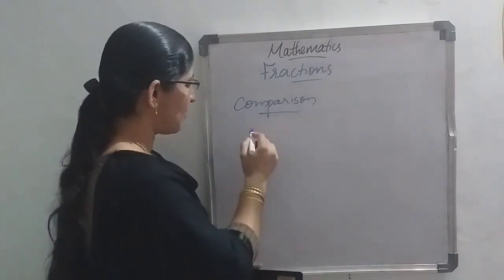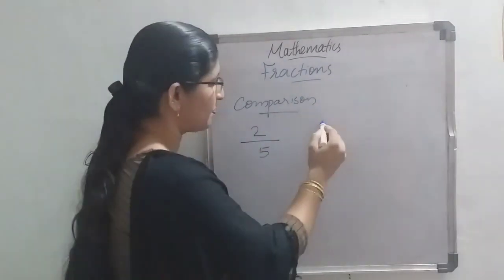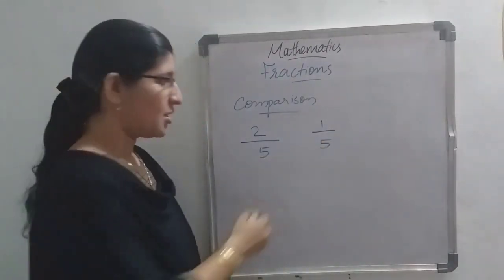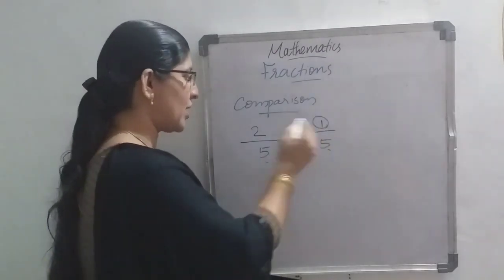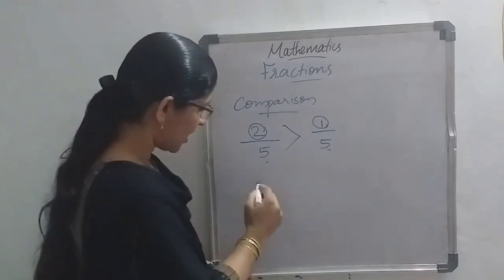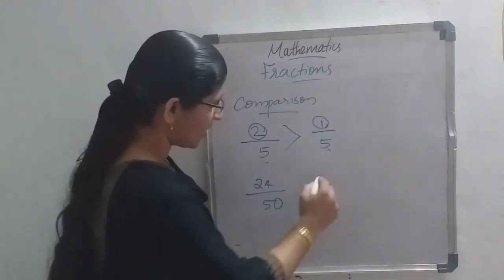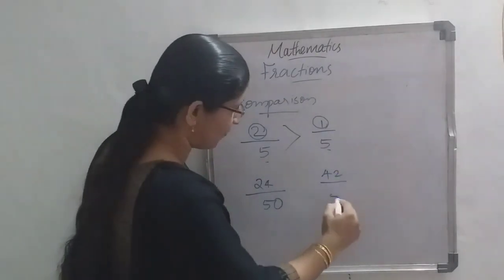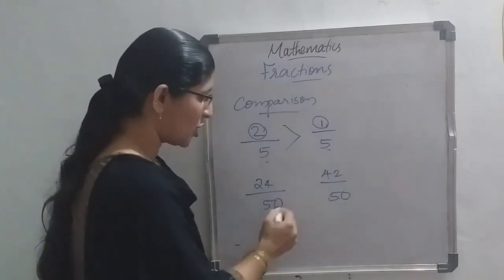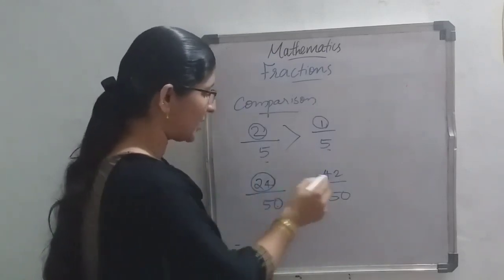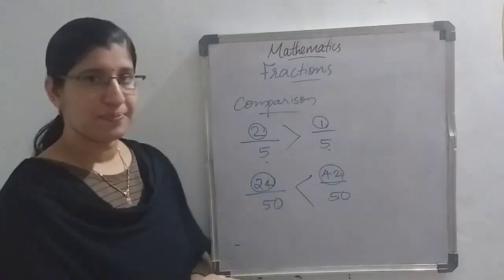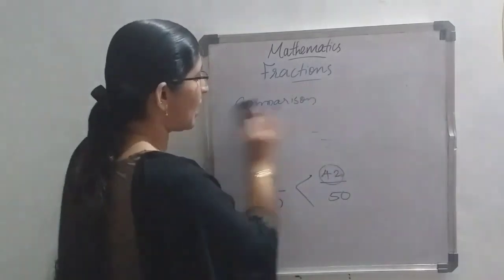Another example: 2 by 5 and 1 by 5 — which is greater? Both denominators are the same, so you only look at the numerator. 2 is greater, so 2 by 5 is the greater fraction. Another example: 24 by 50 and 42 by 50. Both denominators are the same; look at the numerators 24 and 42. 42 is greater, so this is so easy to compare fractions.